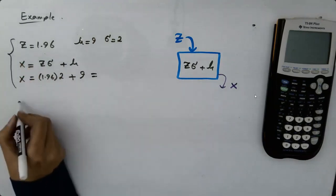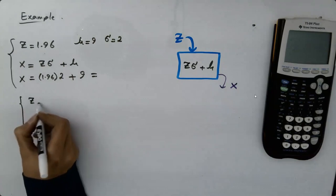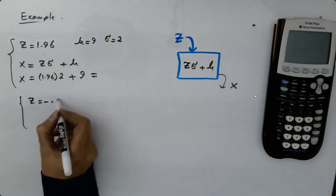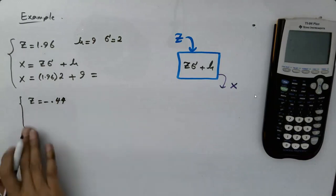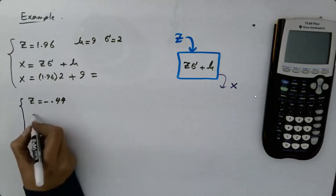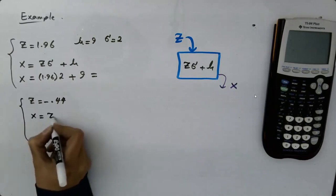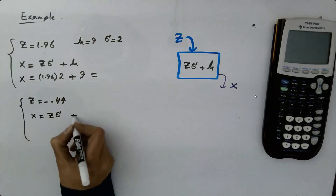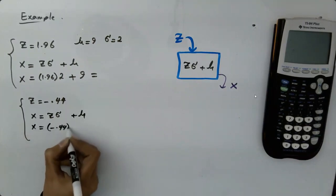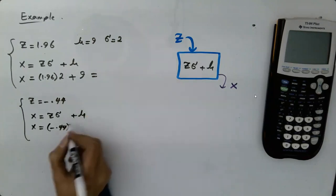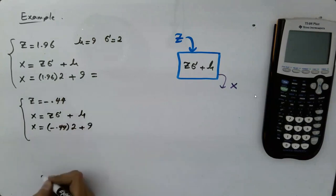The second one, z is negative 0.44. I want to know what is the weight associated to this z-value. I have a formula: z times sigma plus the mean. x is z negative 0.44 times sigma, which is 2, plus the mean, which is 9. What is my weight?